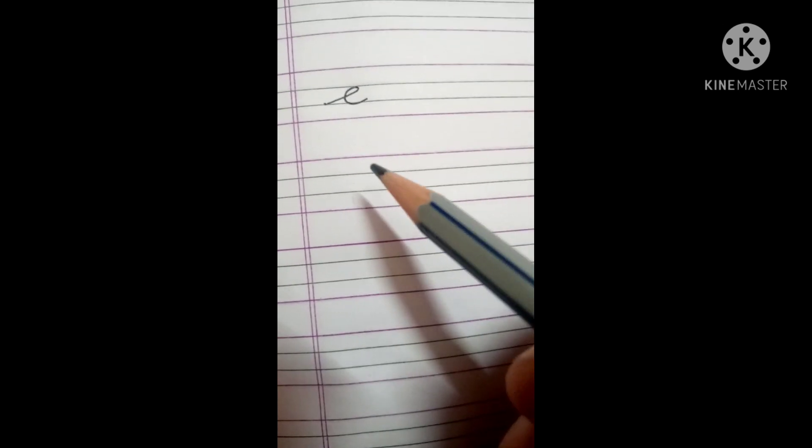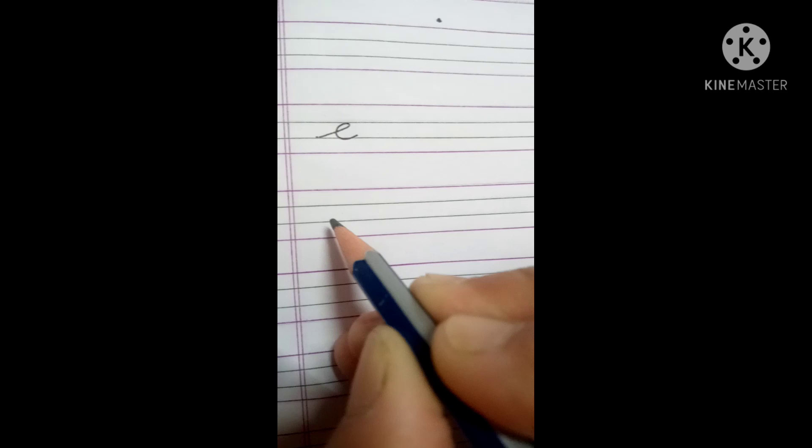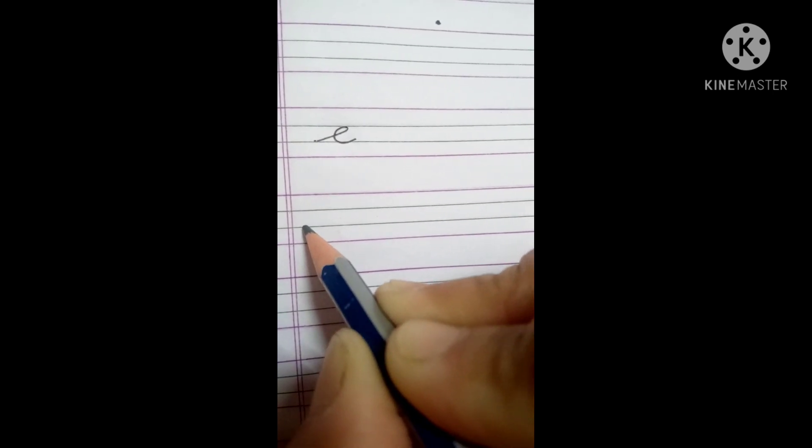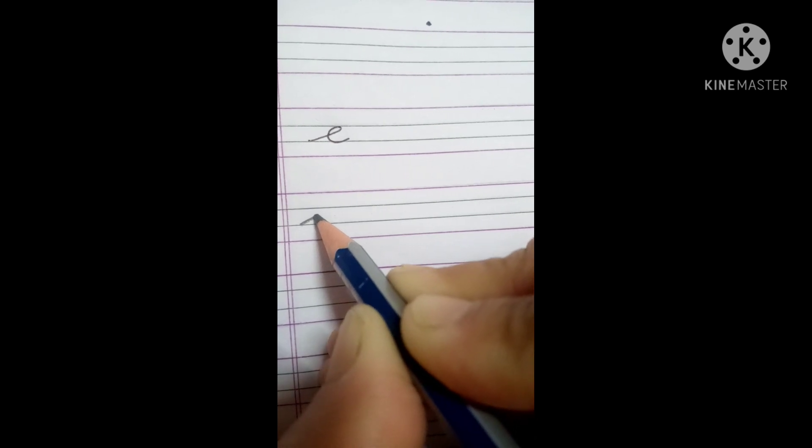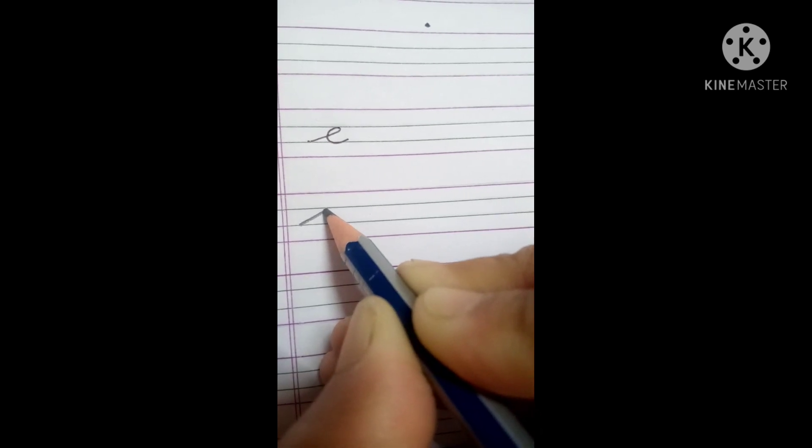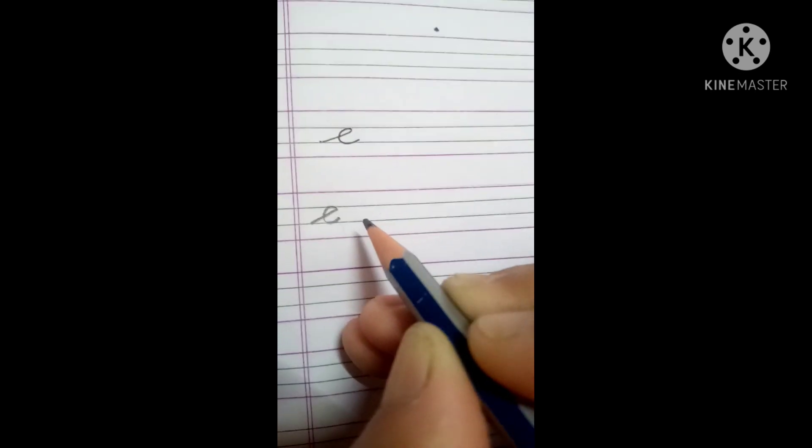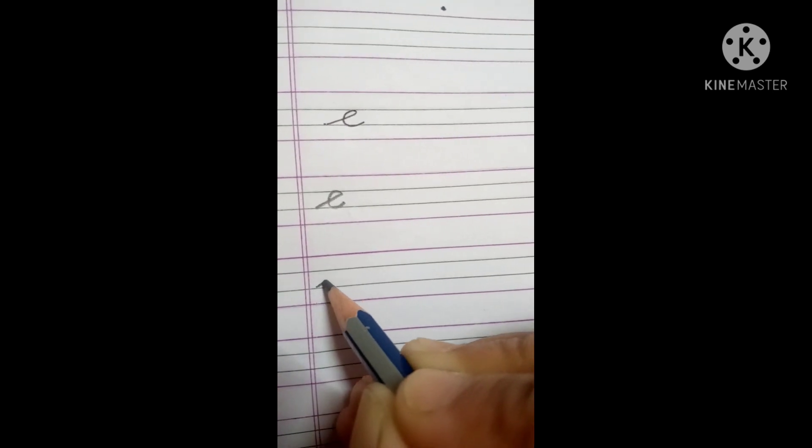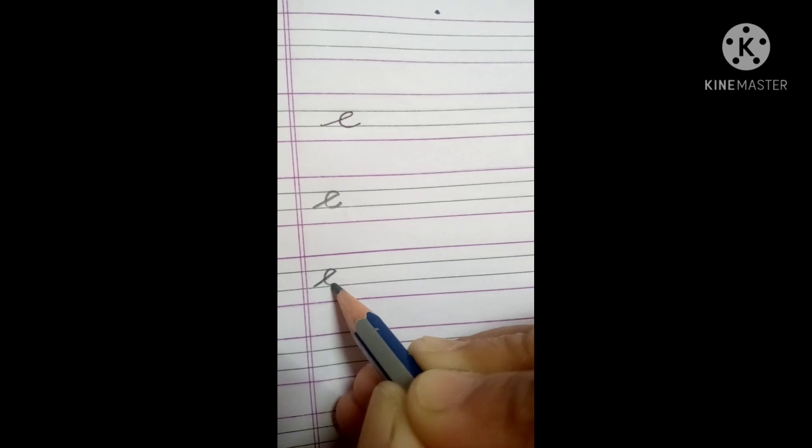This is letter E. So look how do we write it. Just draw a slanting line between the two blue lines, and then take a turn and make a curve.